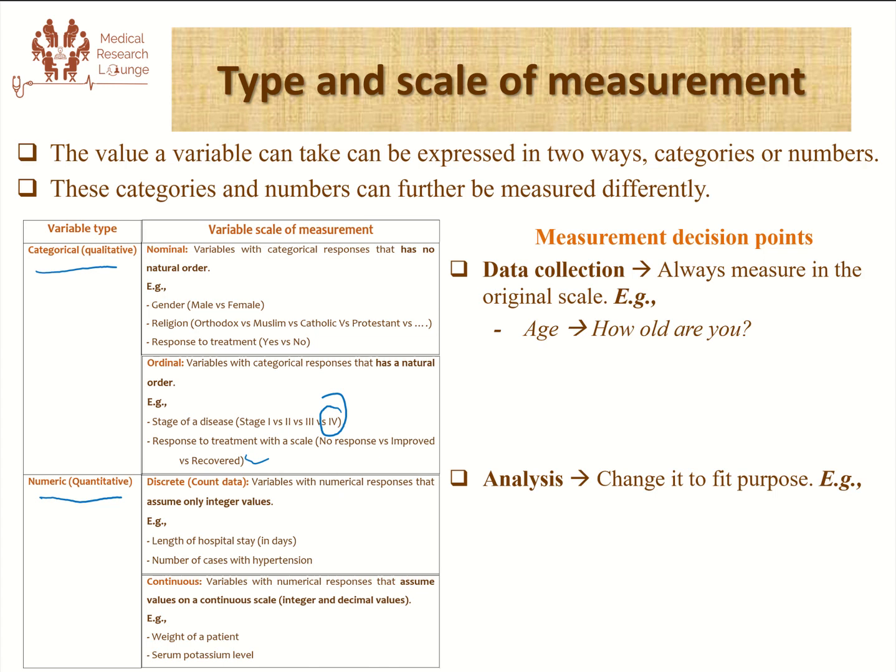But later during analysis, it's a common trend to categorize age into clinically meaningful groups so that the results can be analyzed within a clinically meaningful group, and targeted interventions for some age group can be provided. This is perfectly fine and can be done, but it should only be done after the data is collected in its original scale of measurement. Later, we can transform the data into different categories using transformation techniques.